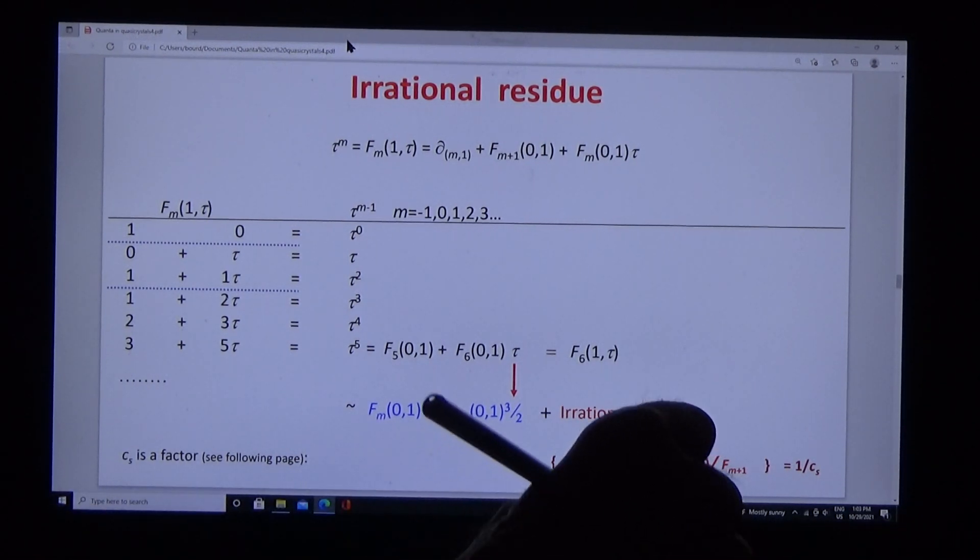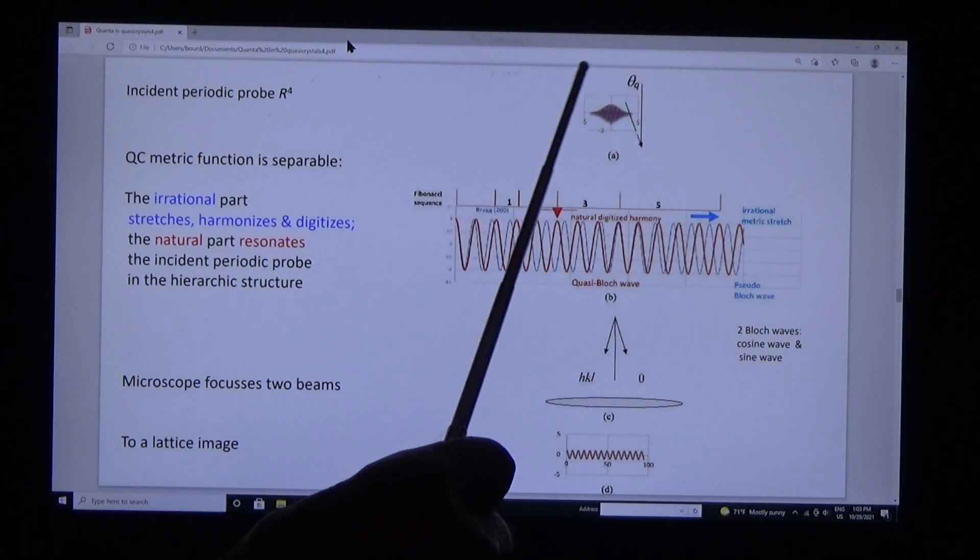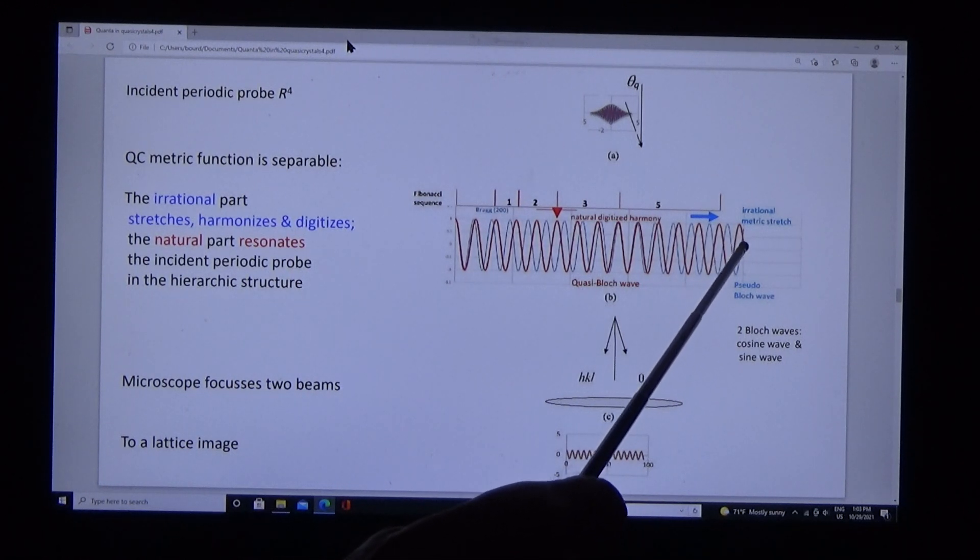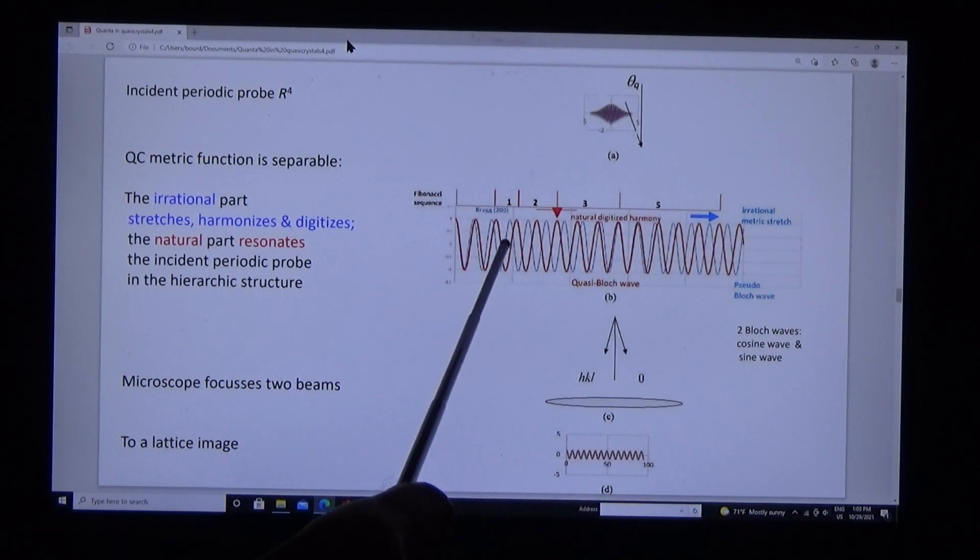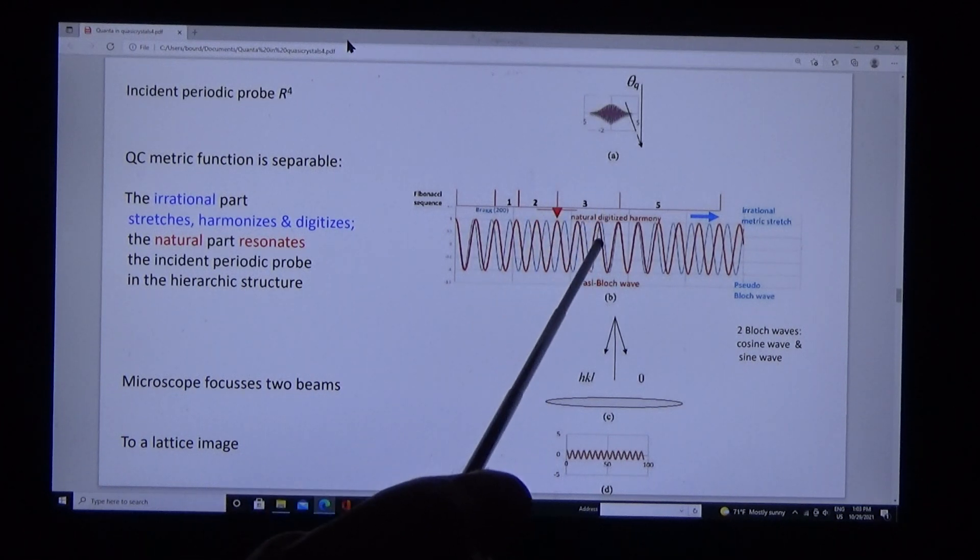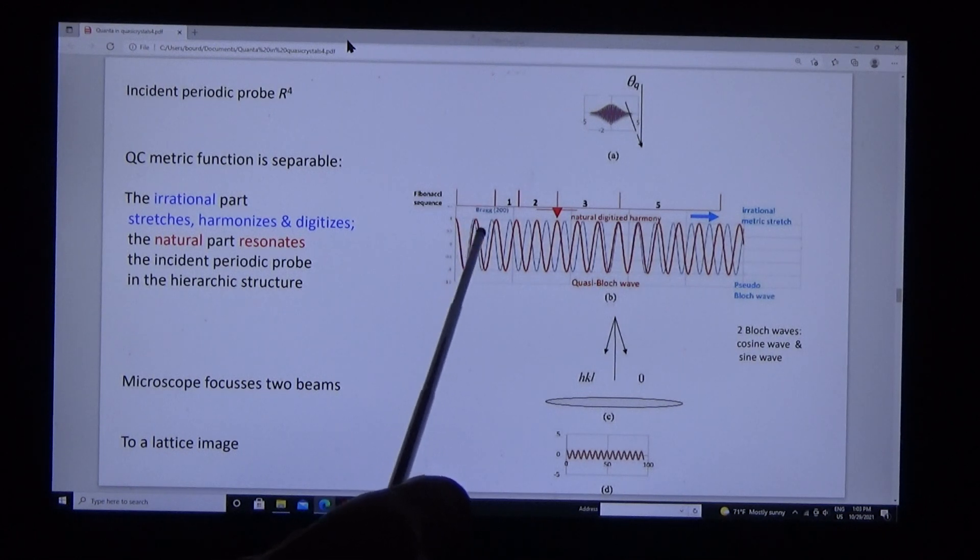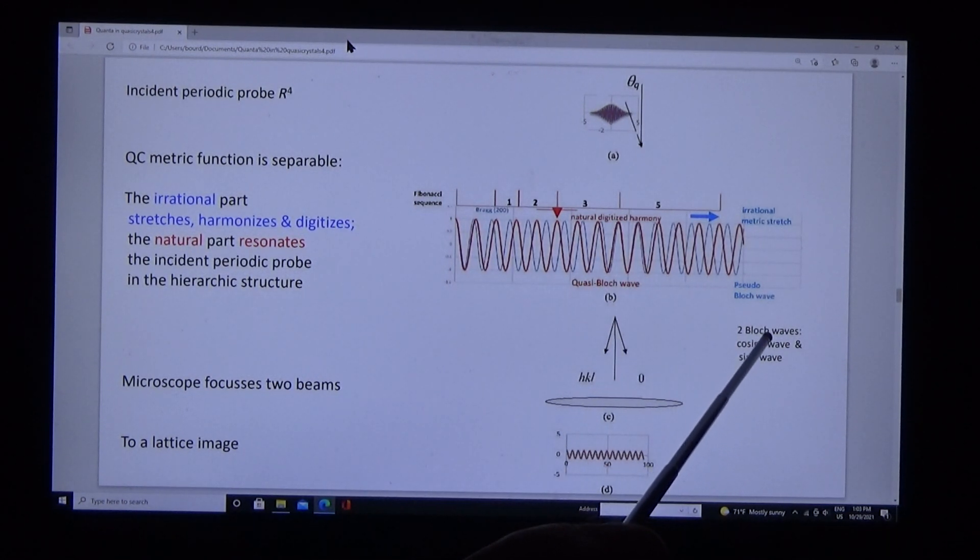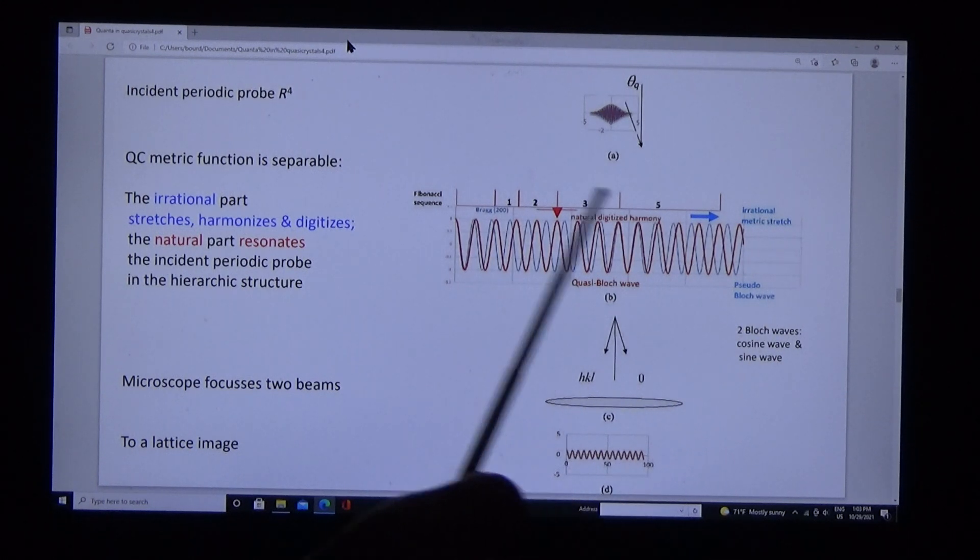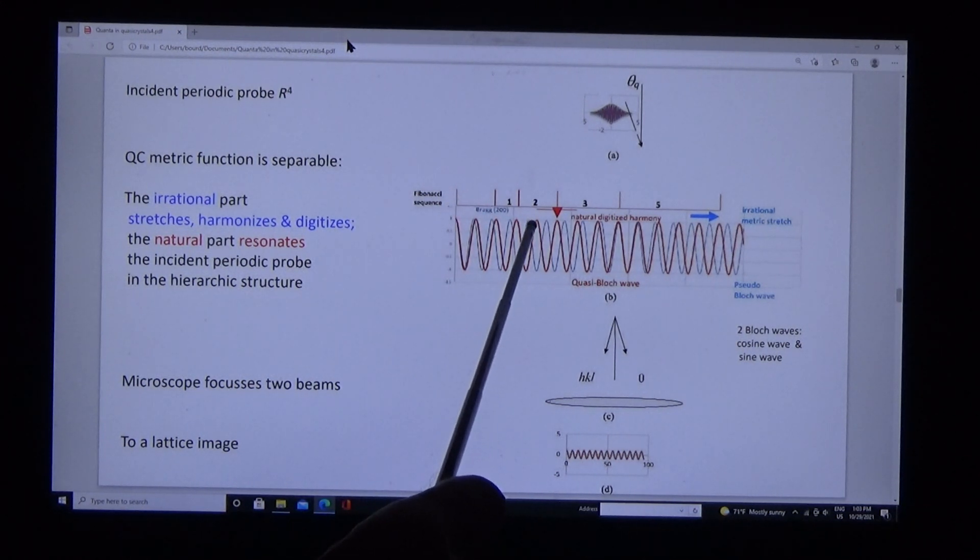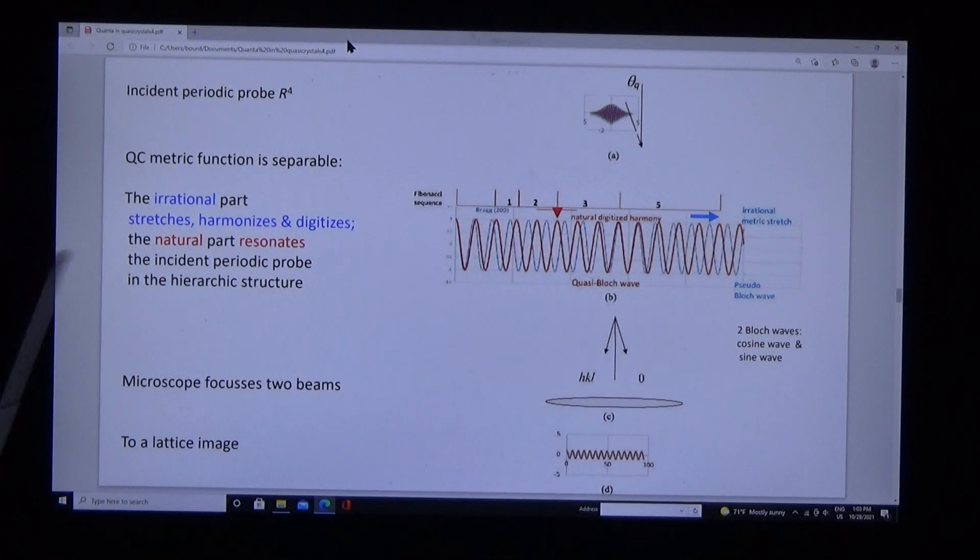Now I can illustrate it. Here's the probe incident on either a crystal in blue or a quasi-crystal in red. When the probe strikes the crystal, it forms in the lattice potentials Bloch waves. In this case, two Bloch waves—we're looking in the two-beam condition. In the crystal, the Bloch waves are commensurate with the unit cell and with all unit cells periodically repeating across the crystal. So that's the Bloch wave.